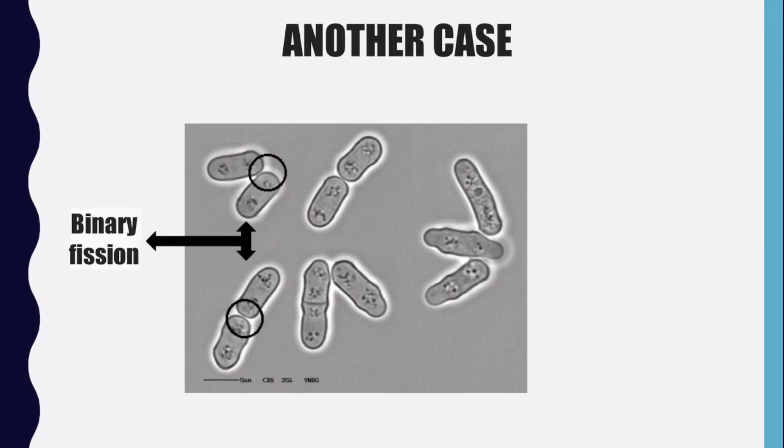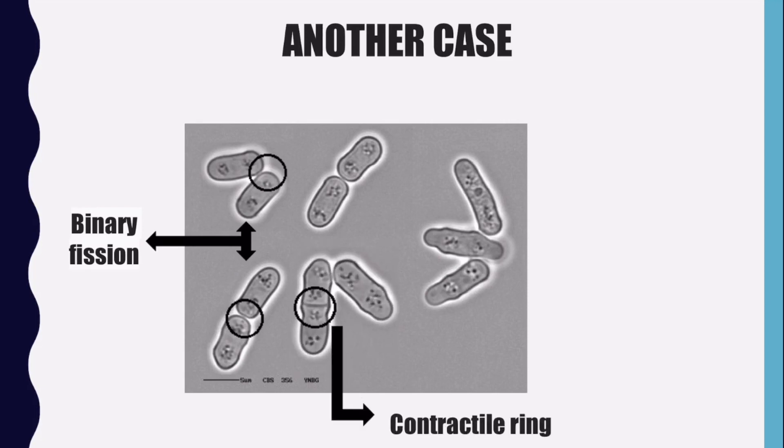Yeast Schizosaccharomyces pombe multiplies itself by binary fission, and in that moment, a contraction ring made of actomyosin and other cytoskeleton compounds is seen besides the plasma membrane synthesis and polymerization of the special cell wall, called the dividing septum.